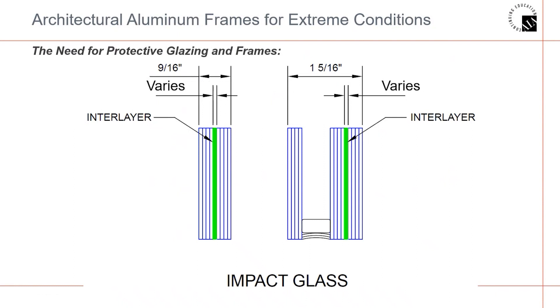In impact applications, the majority of these are 0.90 interlayers. In order to comply with the impact test, it is critical that architects specify one of the interlayers in the tested mock-up.